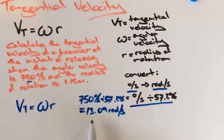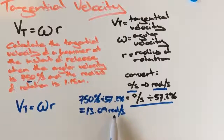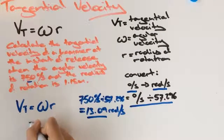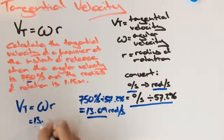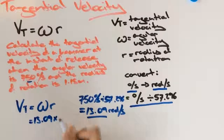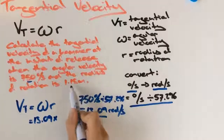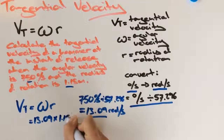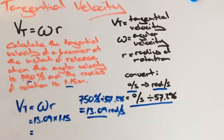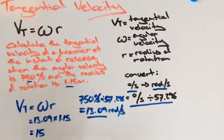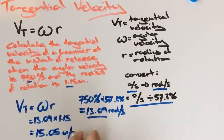Great! So now that we've converted our angular velocity from degrees per second to radians per second, we can take this number and input it into our formula. So 13.09 times our radius of rotation, which is 1.15, which gives us an answer of 15.05 meters per second.